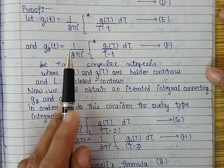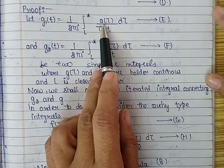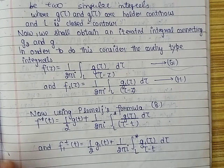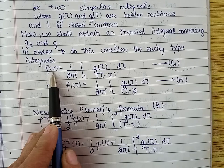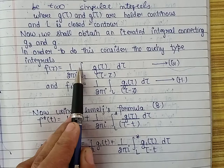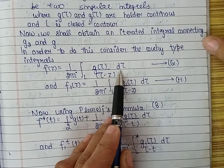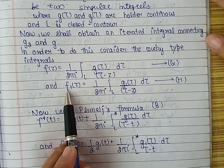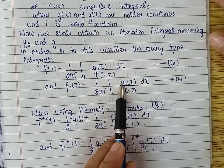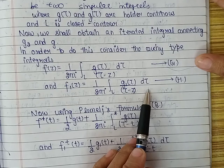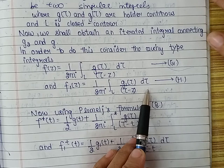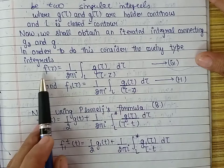Now let us obtain an integral connecting the functions g₂ and g. In order to do this, let us consider two Cauchy type integrals. The first Cauchy type integral is f(z) = (1/2πi) integral over l of g(τ)/(τ − z) dτ. The second Cauchy type integral is f₁(z) = (1/2πi) integral over l of g₁(τ)/(τ − z) dτ. We will now use Plemelj formulas, which are related to the boundary values of a function inside and outside a closed contour l, applied to f and f₁.